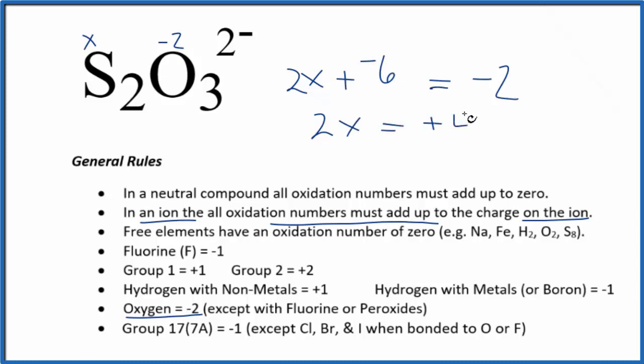X equals a positive 2, so the oxidation number on each sulfur here is going to be positive 2. So if we have 3 times minus 2, that's minus 6. 2 times plus 2, that's plus 4. Add them together, that equals the minus 2 that we're talking about here.